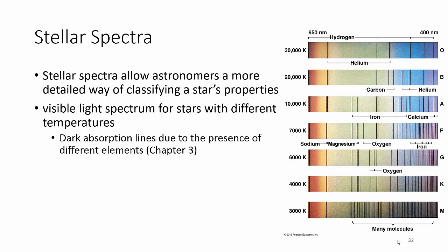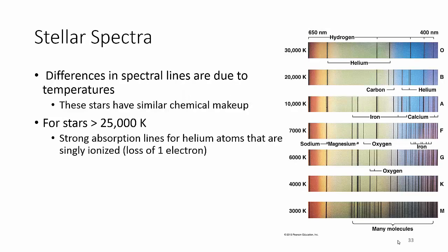However, you can also use these to tell its temperature. Not only does the absorption and emission lines tell us composition, it also tells us temperature. What's kind of interesting in how that works is that for stars greater than 25,000 degrees Kelvin, they're going to have strong absorption lines for helium.